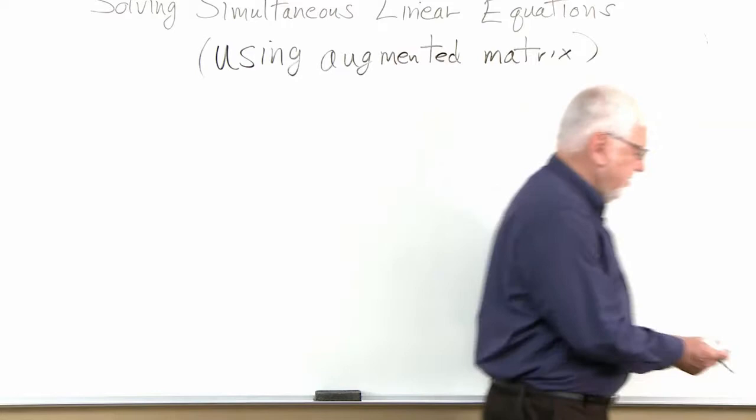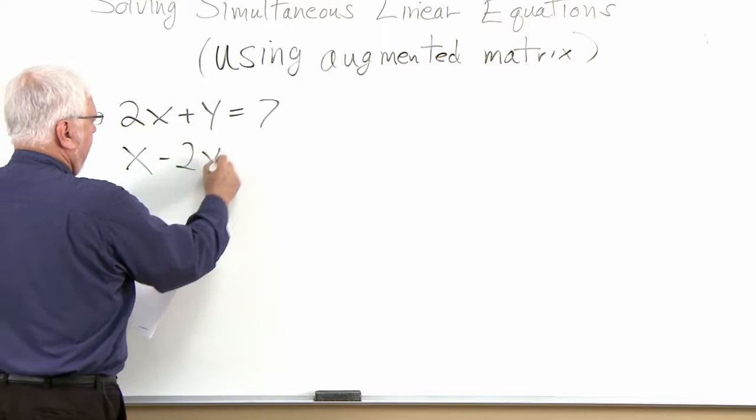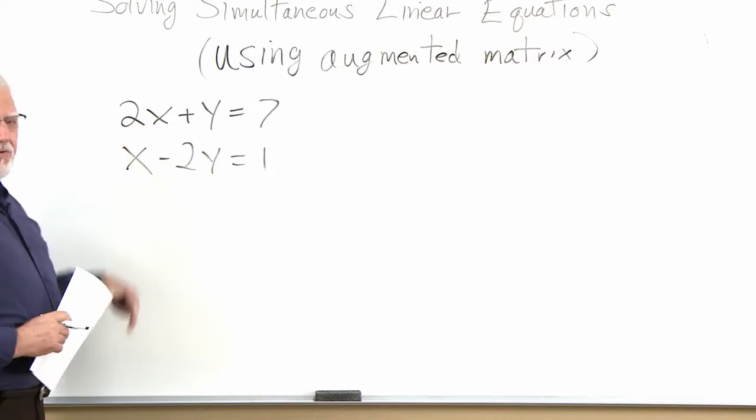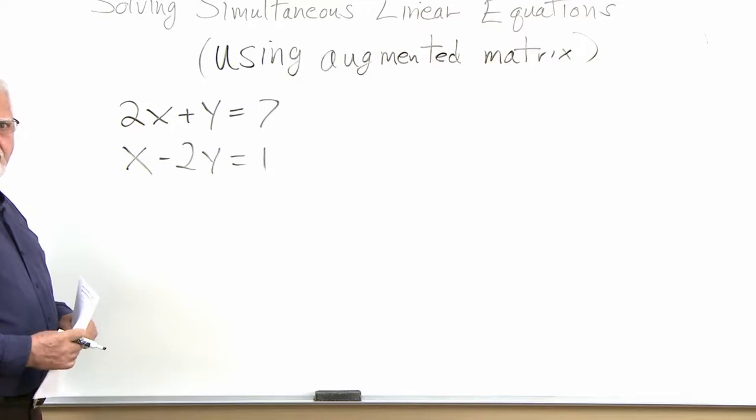The equations I have here are 2x plus y equals 7 and x minus 2y equals 1. Simultaneous means we want to solve these at the same time. These are linear, meaning the graph is a straight line, so they have only one common solution. We've solved these before in this class, both graphically and algebraically, so let's review that algebraic solution.